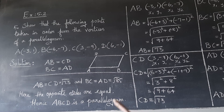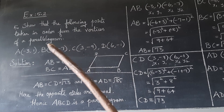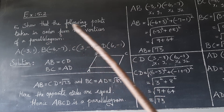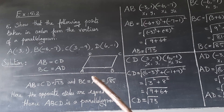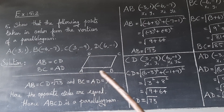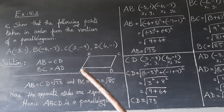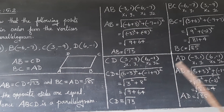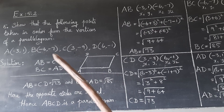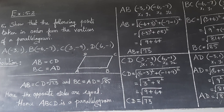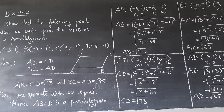So children, we were given four points and we had to check whether they form a parallelogram. By finding the distances AB, BC, CD, and AD using the distance formula, we confirmed it is a parallelogram. So watch the video more than twice. Thank you, children, and do the homework sums properly and neatly.